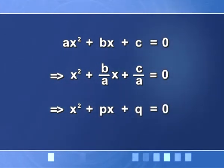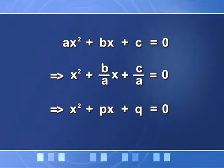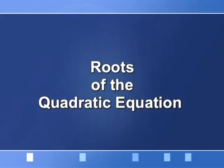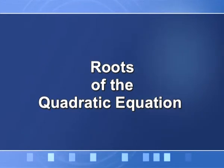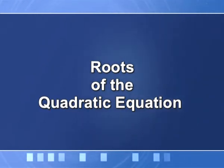These values of x which make the left hand side 0 are called the roots of the quadratic equation. Remember, quadratic degree being 2, there have to be 2 roots. If the degree of the equation is 3, there will be 3 roots, and so on.